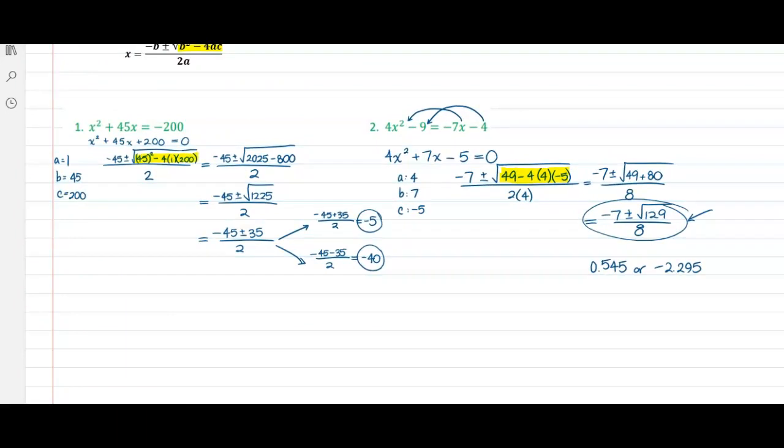In the first example, it was a perfect square. It was 35 squared. So we got two really nice looking rational solutions.